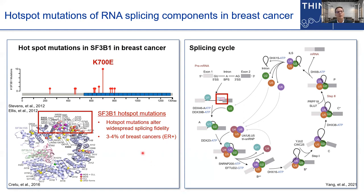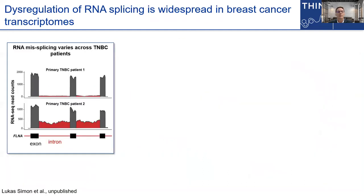As I've noted, these hotspot mutations are pretty rare, thus raising the question: how common or how generalized is dysregulated RNA splicing in breast cancer? Fast forward a decade and thousands of breast cancer transcriptomes later, and I think the data is quite convincing that aberrations in RNA splicing are indeed widespread in breast cancer.